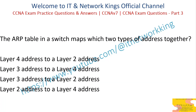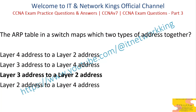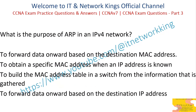The ARP table in a switch maps which two types of address together? Layer 4 address to a Layer 2 address. Layer 3 address to a Layer 4 address. Layer 3 address to a Layer 2 address. Layer 2 address to a Layer 4 address. Answer: Layer 3 address to a Layer 2 address.